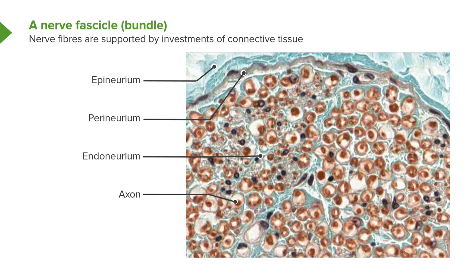The axons shown here are represented by little dark dots, and most of them have a white halo around them. That white halo is where myelin is usually. The myelin has been lost during processing of this tissue, so you don't see it — you just see the space where that myelin should be, the myelin sheath around axons. Have a look through this image and see if you can see those little dots representing axons and the halo of white around them.